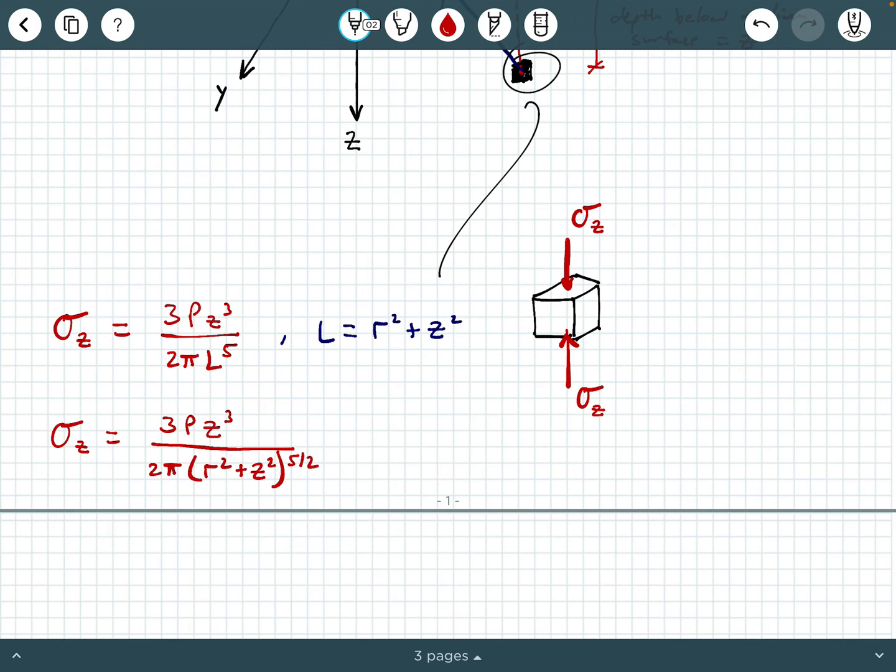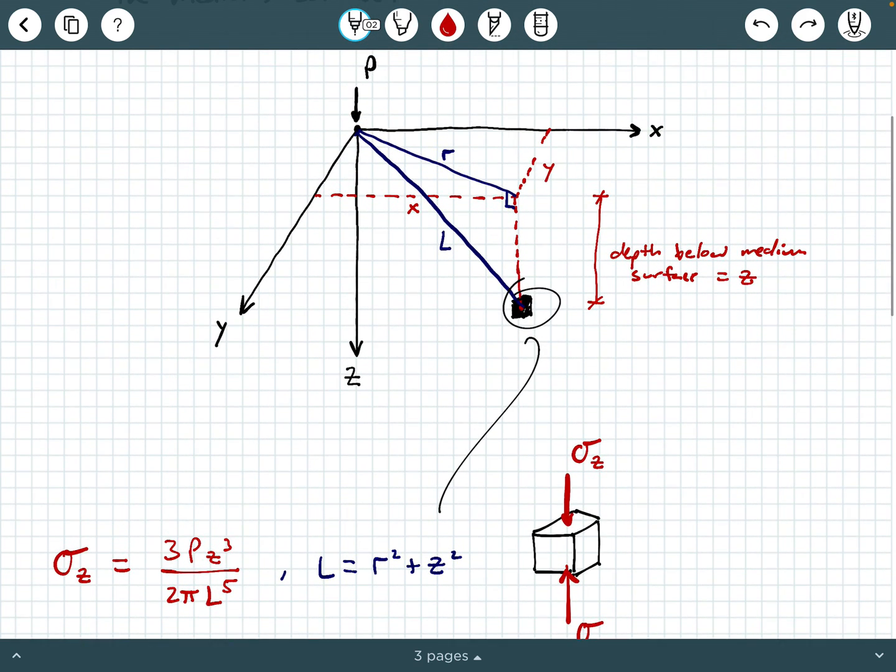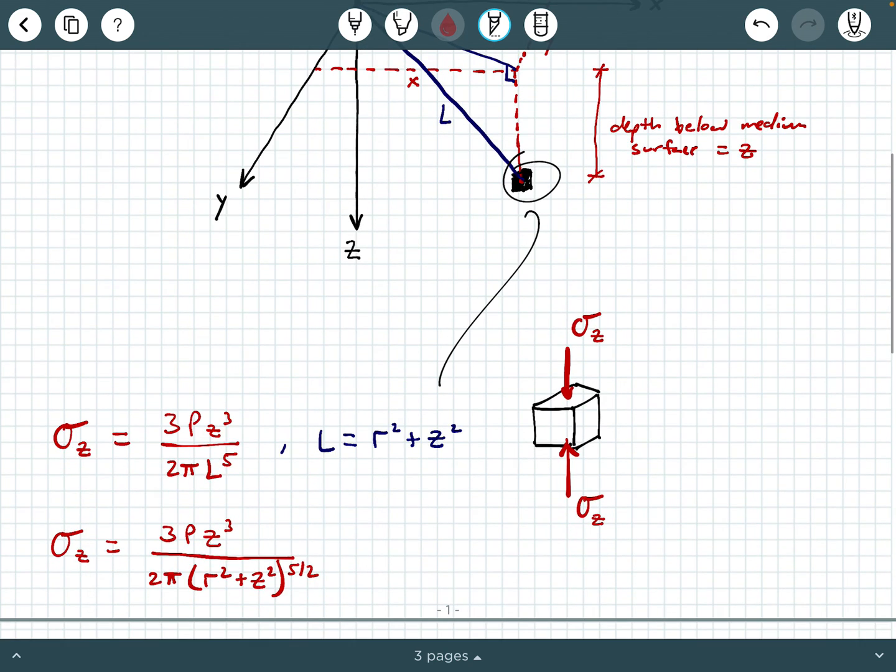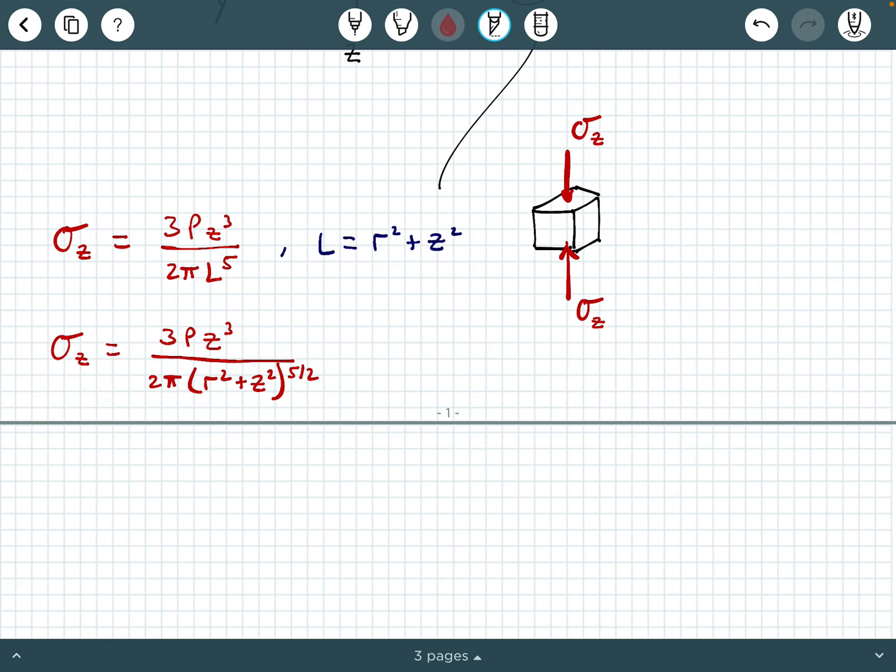Now, if you wanted to further expand, you can further say that r can be broken down using Pythagorean theorem into this x and this y component and substitute that in there. But often, we're going to be utilizing this version of the equation. And again, this equation was developed and solved for originally by Boussinesq in 1883.